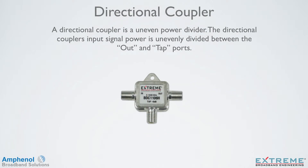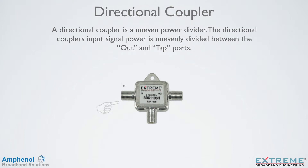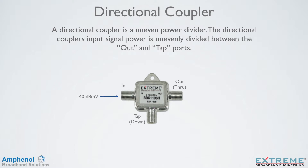Now let's look at directional couplers. A directional coupler is an uneven power divider. The directional coupler's input signal power is unevenly divided between the out or through port and the tap or down ports. Here I'm showing a DC6. If we inject 40 dBmV into the input, the out port will lose 2.1 dB and have 37.9 dBmV. The tap port will lose 6 — the value of the directional coupler — and have 34 dBmV.